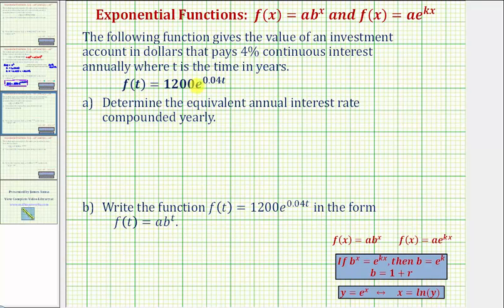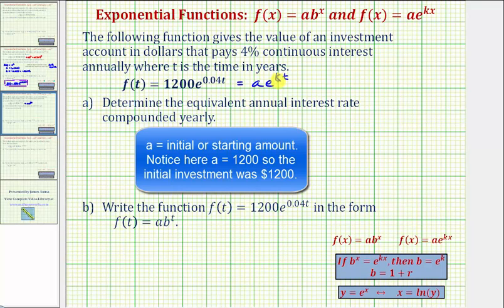Notice how we have an exponential function with base e, or more generally in the form a times e raised to the power of kt. Whenever we have an exponential function in this form, the value of k indicates the continuous growth or decay rate.